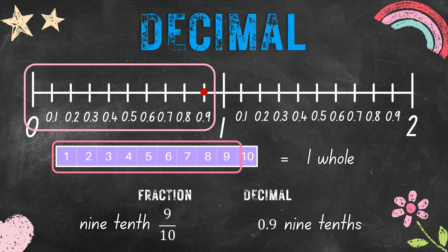Let's jump to 9 parts of a whole. Just the same as the other parts — this is written as 9 over 10 in fraction, and in decimal that is 0.9. It is read as 9 tenths in both fraction and decimal.